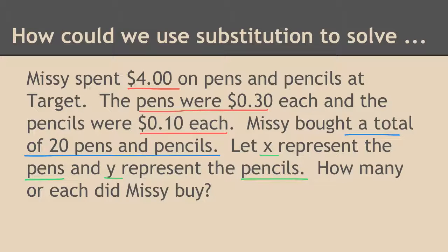So we're going to start off with our equations. So my red equation, I know $0.30 times every pen, which is the x, and $0.10 times every pencil has to equal $4. My blue equation says the number of pens plus the number of pencils has to equal 20.